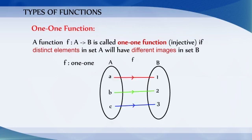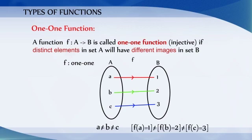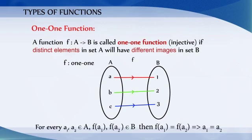the distinct elements of set A — that is A, B, C — are having different images in set B. In other words, for every a1, a2 belonging to A, and f(a1), f(a2) belonging to B, if f(a1) is equal to f(a2), then a1 is equal to a2.